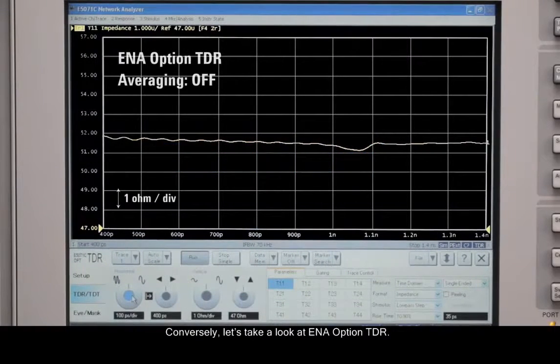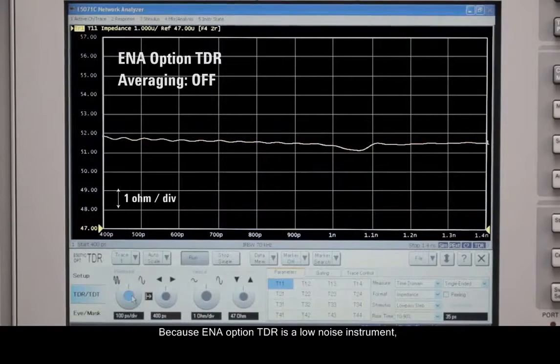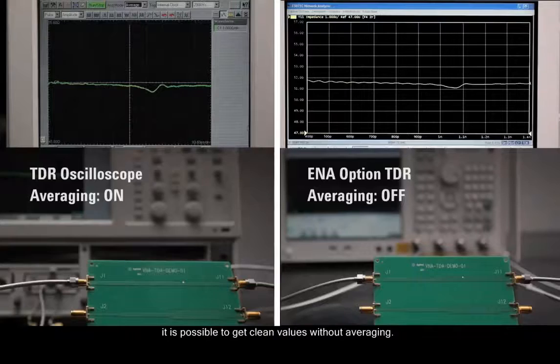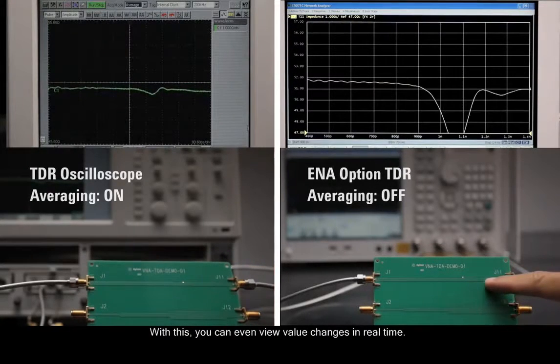Because ENA Option TDR is a low noise instrument, it is possible to get clean values without averaging. With this, you can even view value changes in real time.